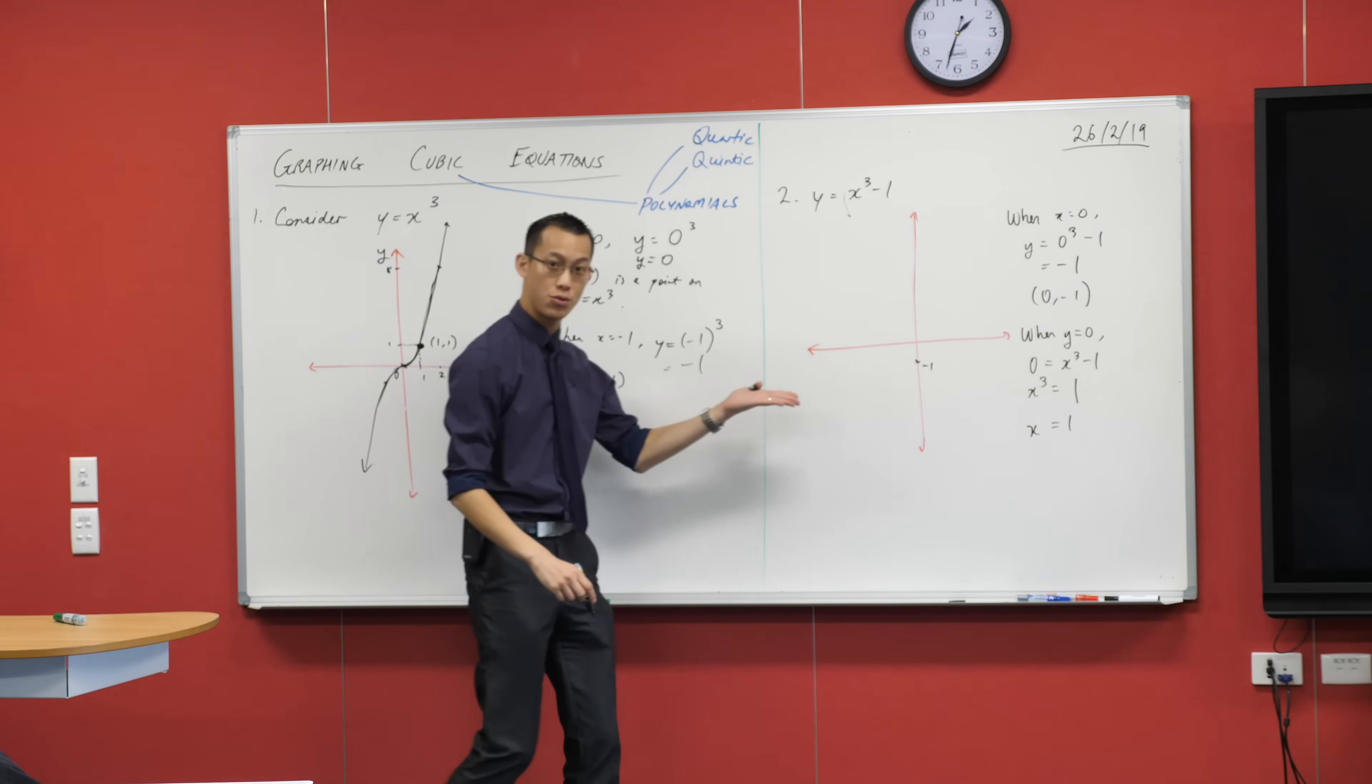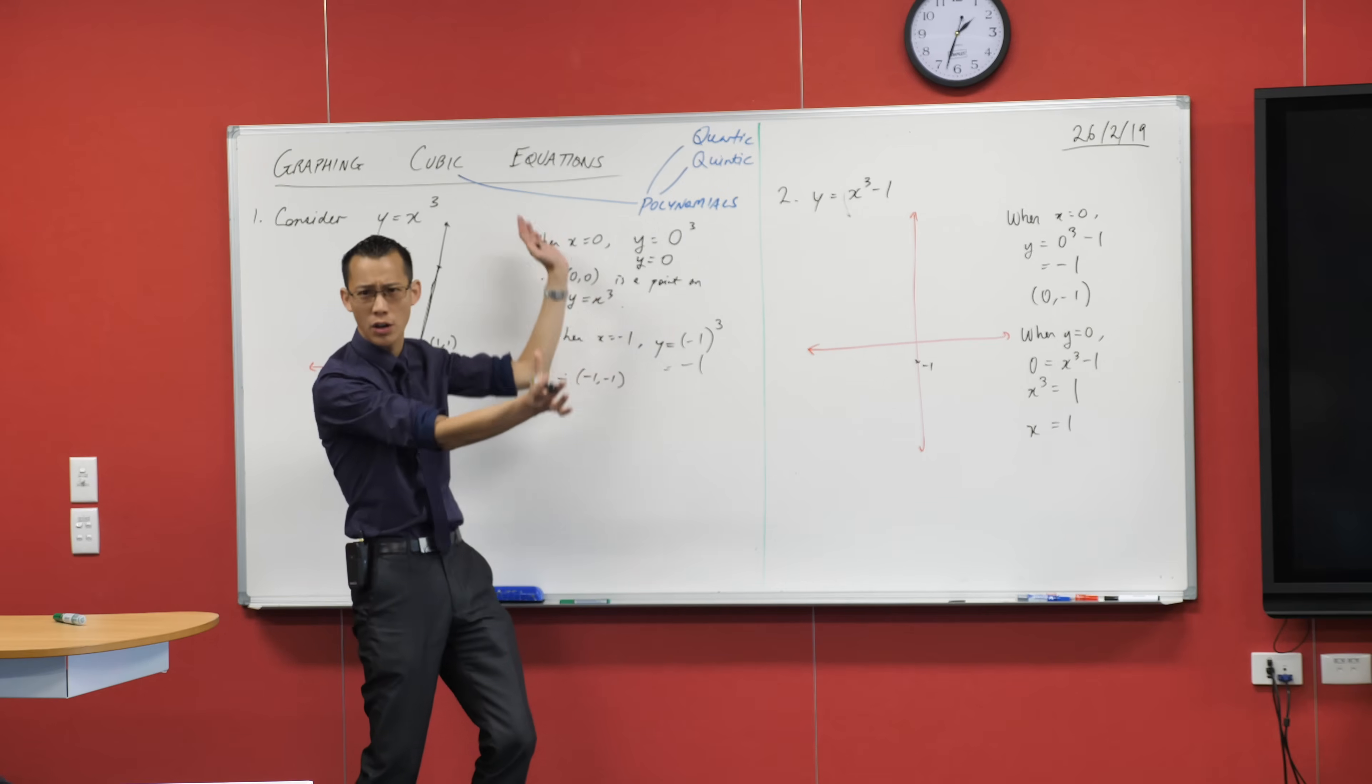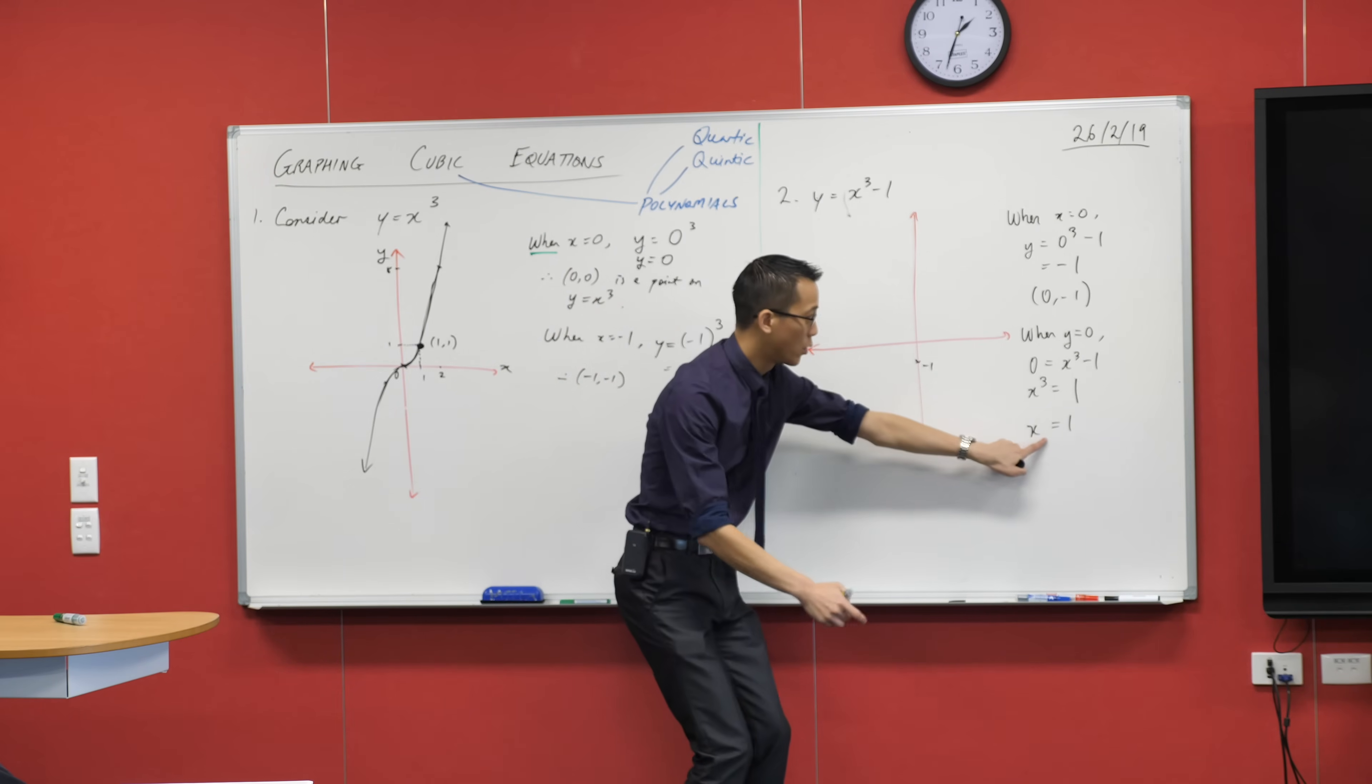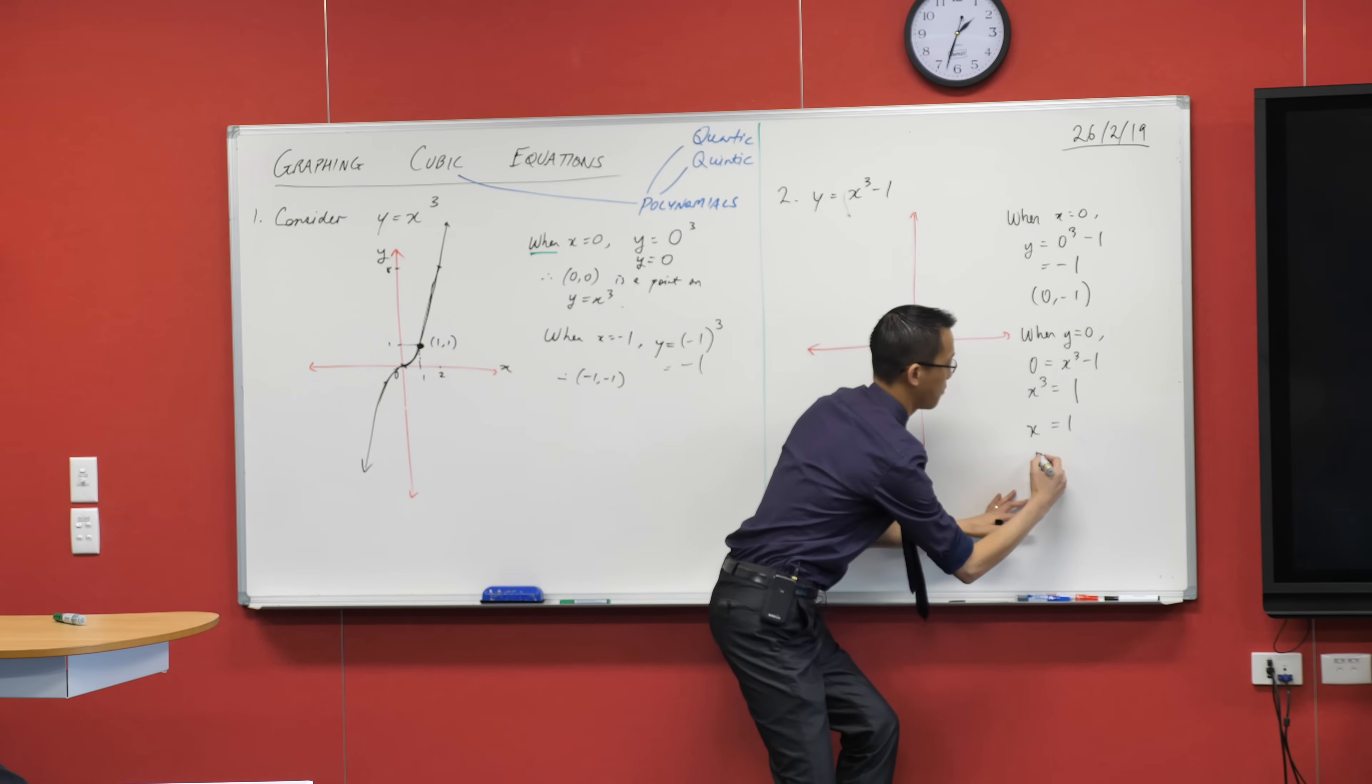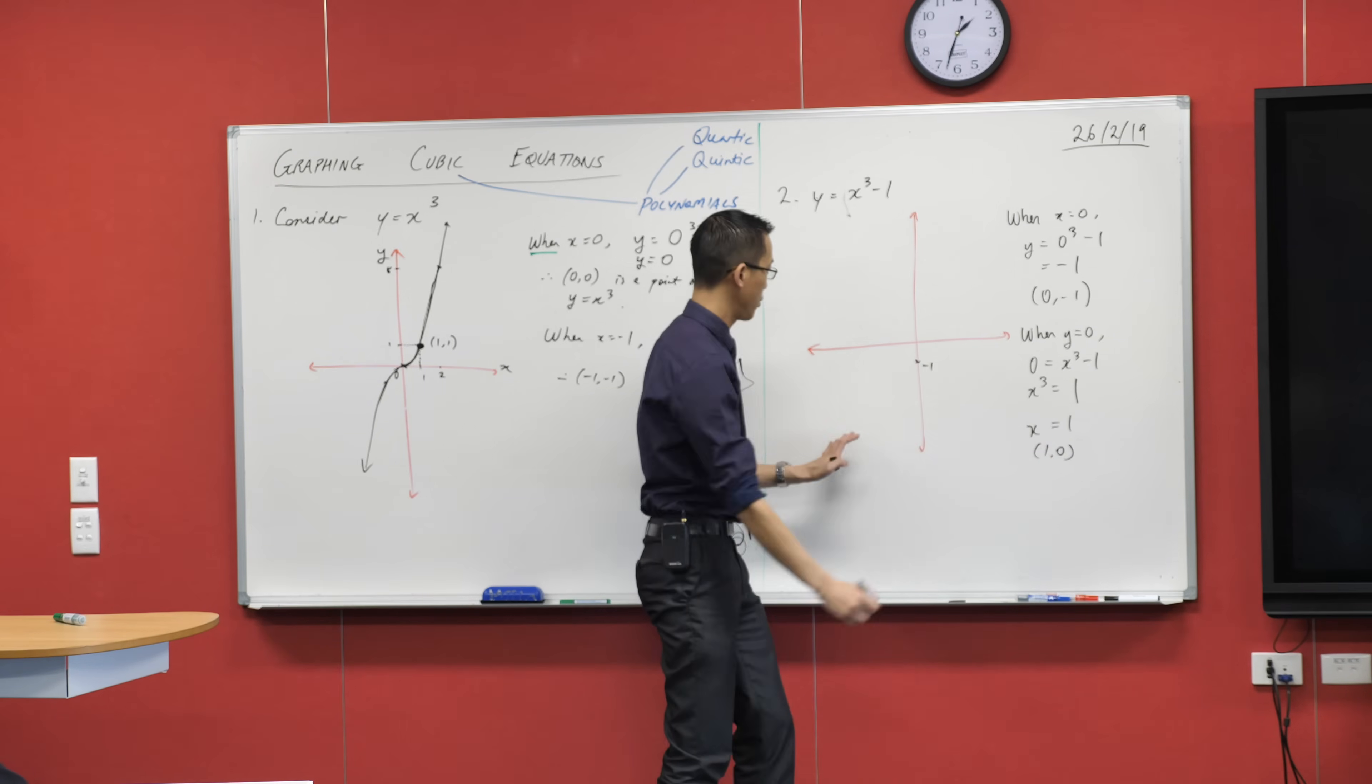So I can now put a different point onto my axis, onto my Cartesian plane for this. There's the x-coordinate, there's the y-coordinate. So that's 1 comma 0, right? Which is here.